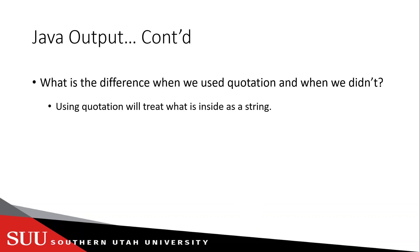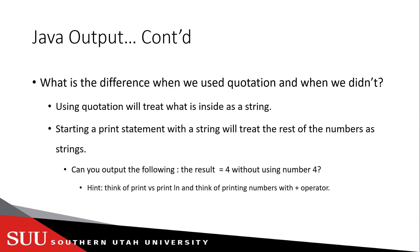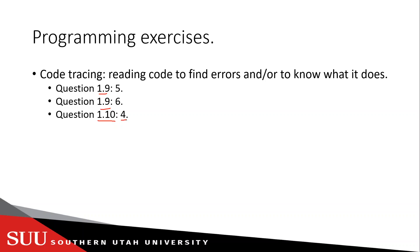To summarize: using quotations treats whatever is inside as a string, as we saw with numbers. The `+` operator with numbers following a string acts as string concatenation. For practice, try the programming exercises from the book: question 5 from section 1.9, question 6 from section 1.9, and question 4 from section 1.10 — these are good practice for what we just learned.